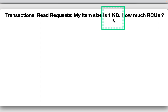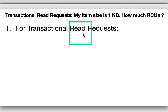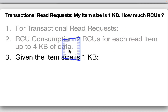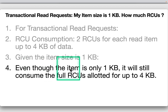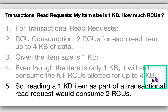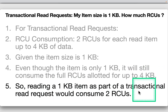For a transactional read of a 1KB item: the rule is two RCUs per read item up to 4KB. Even though the item is only 1KB, it still consumes the full RCUs allocated for up to 4KB. So reading a 1KB item as part of a transactional read request consumes two RCUs.